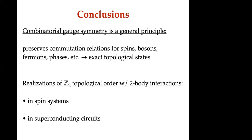To conclude: two key points. First, combinatorial gauge symmetry is the general principle because it preserves the commutation relations for spins, bosons, fermions, and phases — these are exact, non-perturbative Hamiltonians with full gauge symmetry. Second, the systems described here utilize combinatorial gauge symmetry to construct spin systems and superconducting circuits out of only two-body interactions to give Z2 topological order. That wraps up the body of the talk.